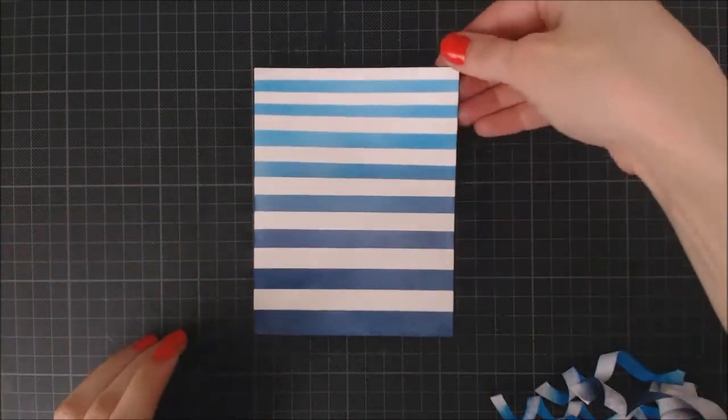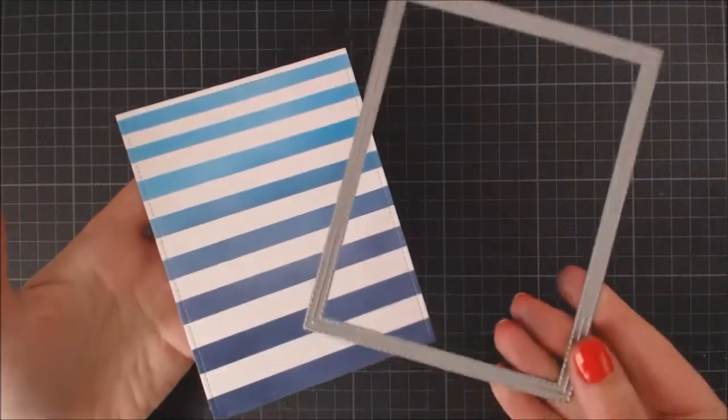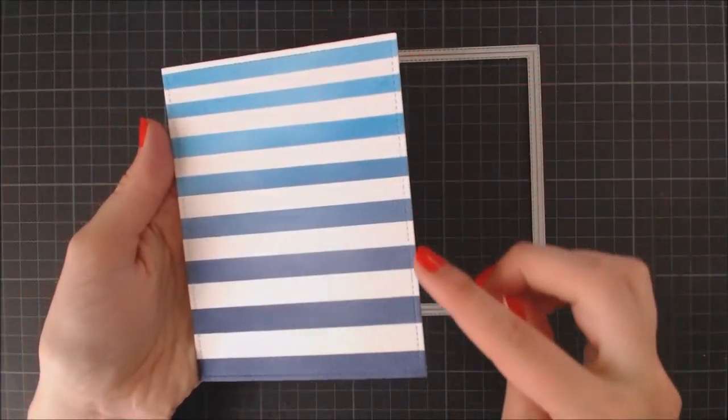To finish it off, I went ahead and die-cut the border with an outside-in stitched rectangle die.